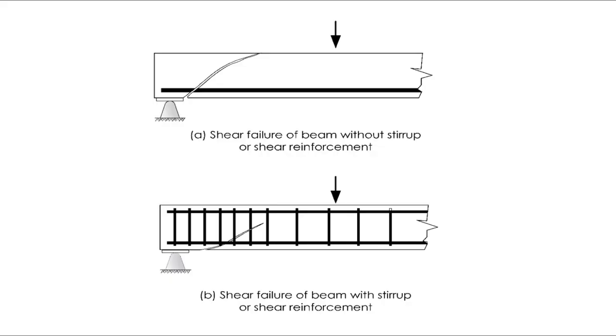In figure A, makikita natin yung shear failure sa beam when stirrup or shear reinforcement is not provided. And in figure B, is the shear failure of the beam with stirrup or shear reinforcement.